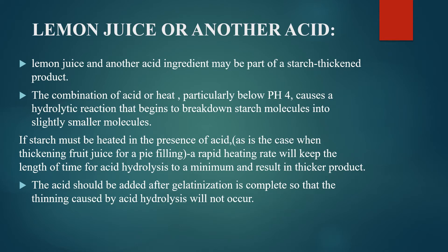Lemon juice or any other acid, when added during the gelatinization process, results in a good starch-thickened product. The combination of acid and heat at a pH below 4 actually causes a hydrolytic reaction, breaking the starch into very small molecules. If starch must be heated in the presence of acid, a rapid heating rate will keep the time for acid hydrolysis to a minimum and result in a thicker product.